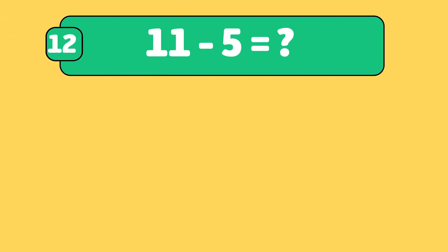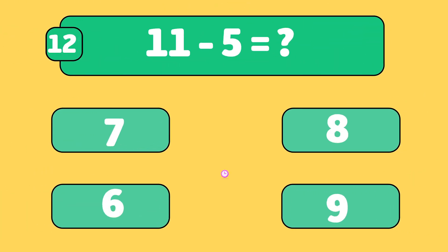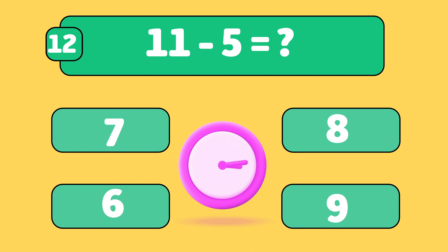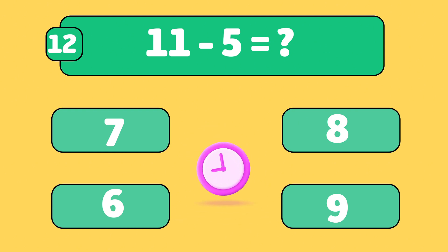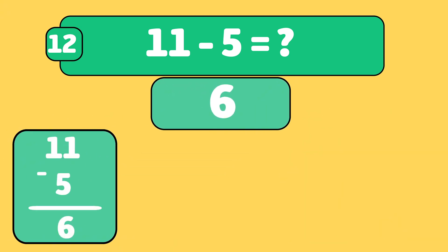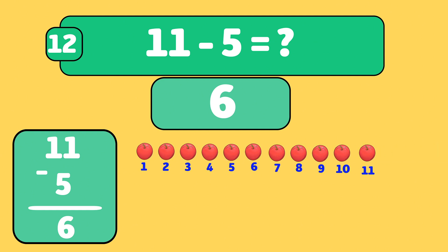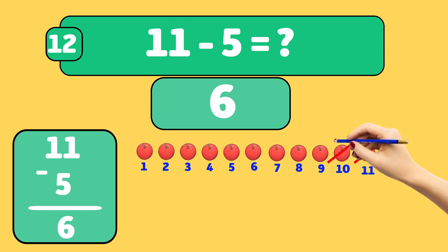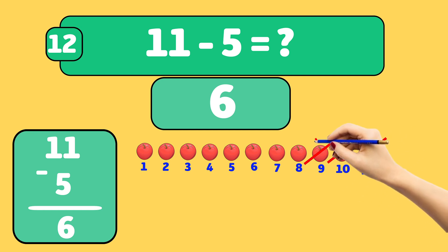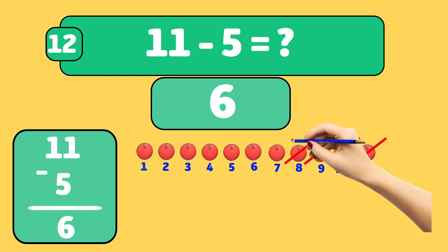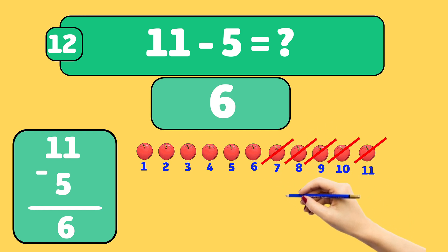What is eleven minus five? The answer is six. We start with eleven apples and remove them one by one: ten, nine, eight, seven. Now we have six apples left.